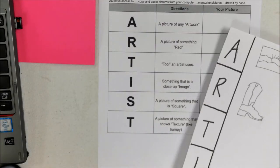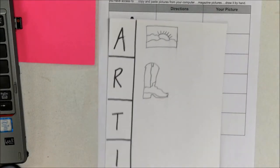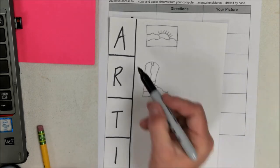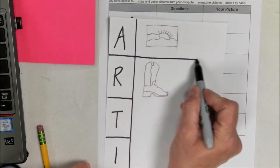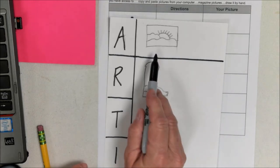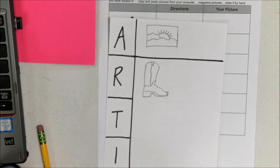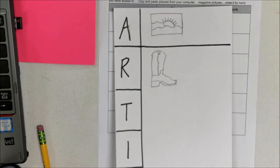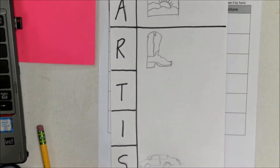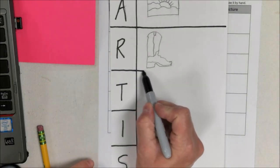So the first thing that you would draw would be A, and that is any artwork. So I drew a landscape picture. It could be a landscape, sculpture, anything that you would see in art.